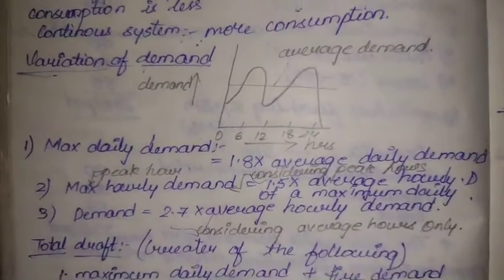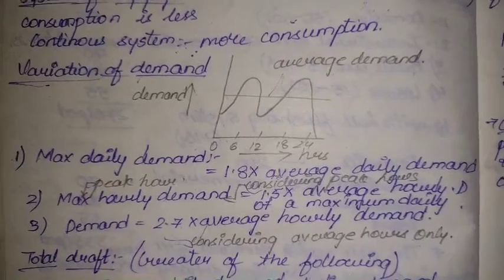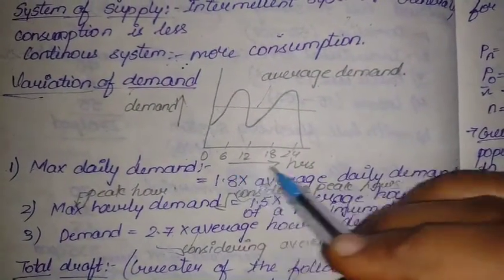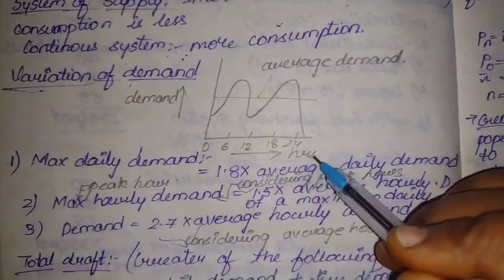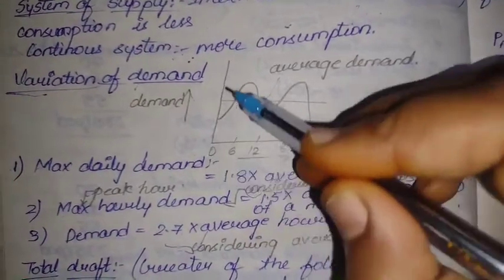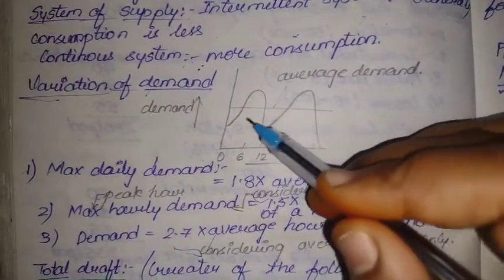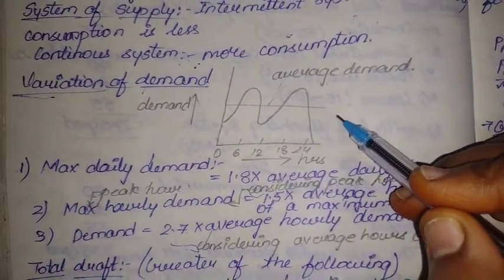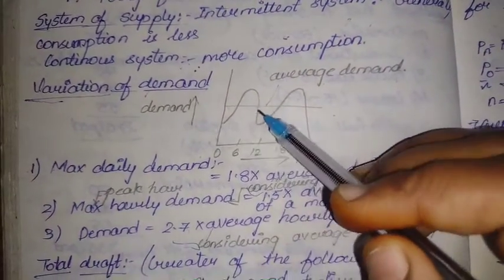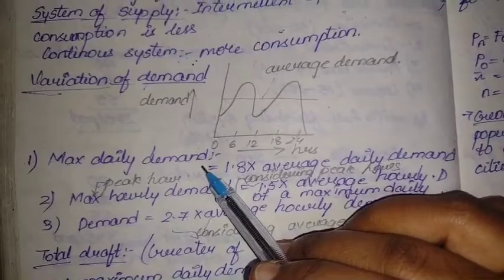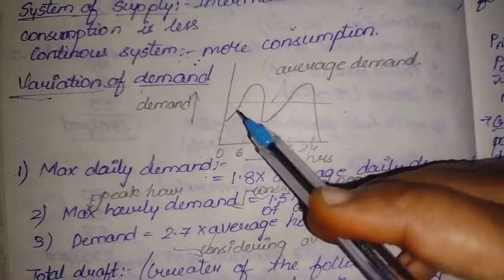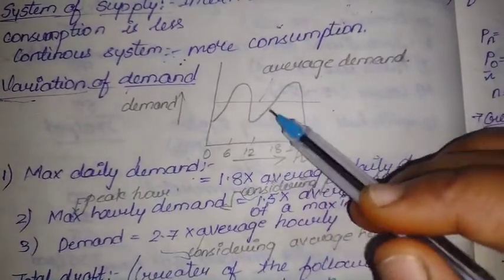Regarding the variation of demand, we draw a diagram with hours on the horizontal axis and demand on the vertical axis. This gives us a demand-to-time diagram, and from this we derive the average demand by considering various factors and taking the average.